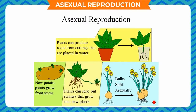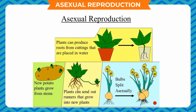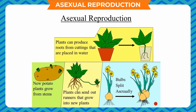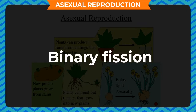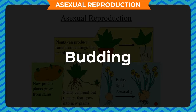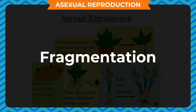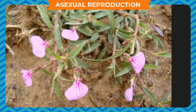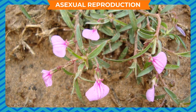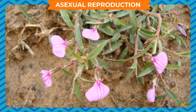Some methods of asexual reproduction are binary fission, budding, spore formation, fragmentation, etc. It occurs mainly in lower plants.